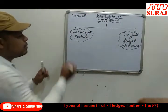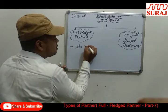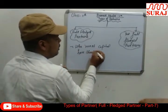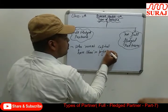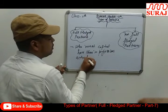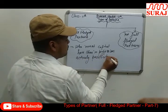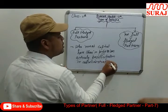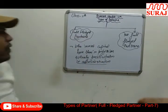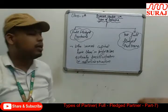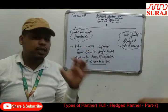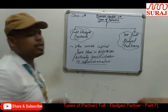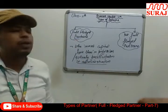In partnership organizations, there are 2 types of partners. The person who invests money in the business, has a share in profit or loss, and actively participates in the administration of the business is known as the full-fledged partner.